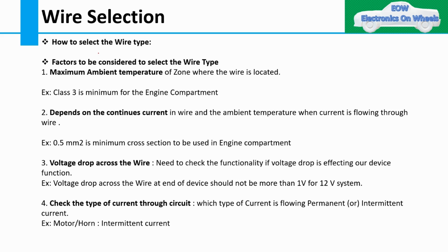When selecting a wire or wire type, there are some factors we need to consider. The first factor is the maximum ambient temperature of the zone where that wire is located. We have zones like the passenger zone, engine compartment, passenger compartment, or trunk, and based on where that particular wire is, you have to select the wire.